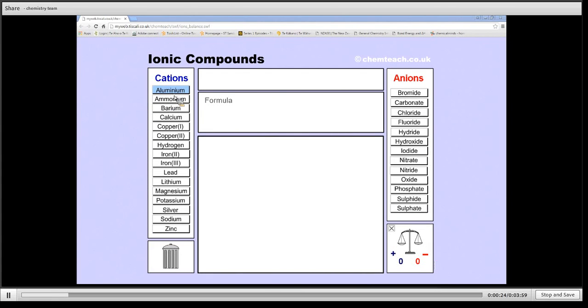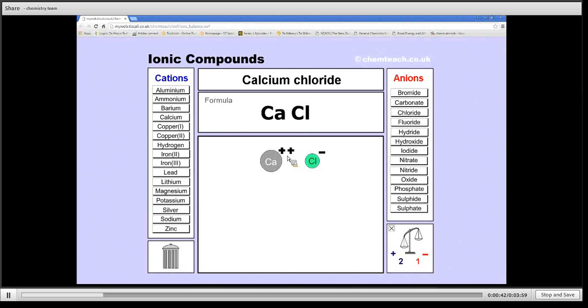So as an example, if I take for instance calcium and I react it with chloride, calcium chloride is the compound I'm looking for. The symbol for calcium is Ca, the symbol for chloride is Cl. Now calcium has a positive charge of 2+, so you can see it down here, chloride has a negative charge of minus 1.